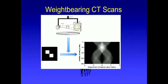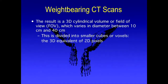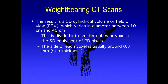You place the machine, do the scan, and it takes about two minutes as opposed to a normal CT — really fascinating. The result is a three-dimensional cylinder of volume, or field of view, varying in diameter between one and 40 centimeters. This is divided into smaller cubes called voxels. A voxel is the 3D equivalent of the pixel on your phone — that's the best way to think about what you're getting.